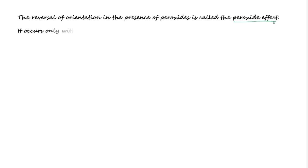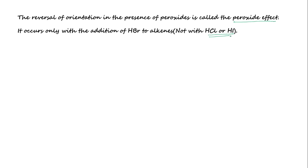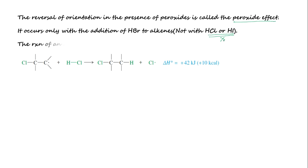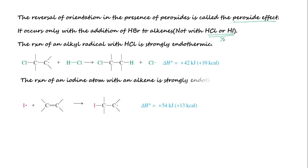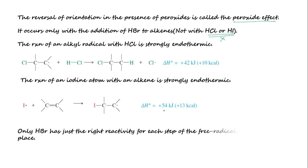The peroxide effect occurs only with the addition of HBr to alkenes. It is not seen with HCl because the reaction of an alkyl radical with HCl is strongly endothermic. Similarly, the peroxide effect is not observed with HI because the reaction of an iodine atom with an alkene is strongly endothermic. Only HBr has just the right reactivity for each step of the free radical chain reaction to take place and show anti-Markovnikov's orientation.